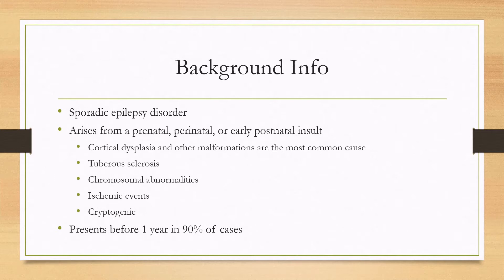There are many causes of infantile spasms. The main and most common cause are malformations, including cortical dysplasia being the most common. Other causes can be tuberous sclerosis, chromosomal abnormalities, ischemic events, and sometimes when no cause is found it's called cryptogenic.